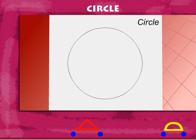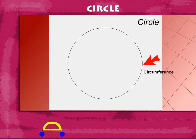This figure is called a circle. The length of the curved line made by the pencil is called the circumference of the circle.